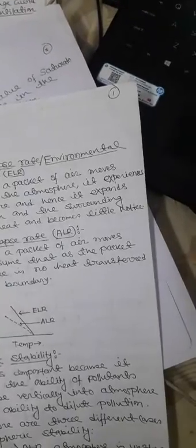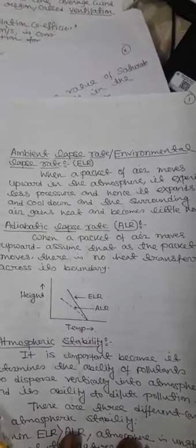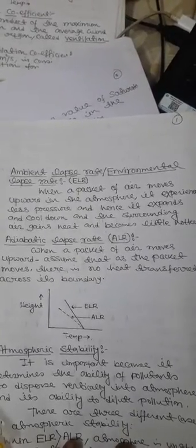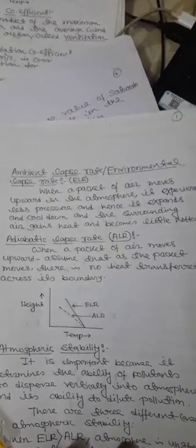The ambient lapse rate describes what happens when a packet of air moves upward in the atmosphere: it experiences less pressure, and hence it expands and cools down. The surrounding air gains heat and becomes slightly hotter. This process is called the ambient lapse rate.